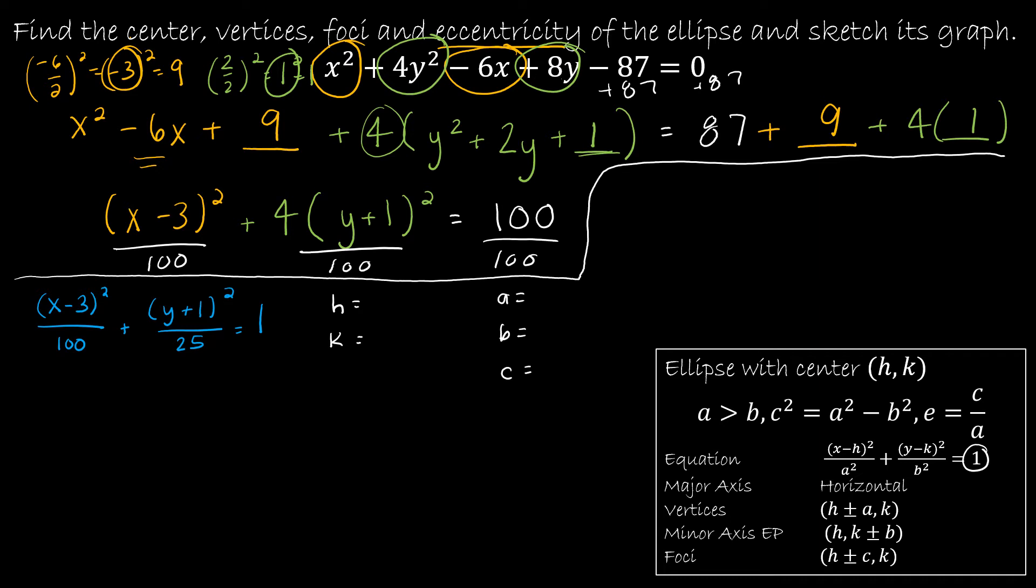From here, I'm just going to find h and k and a and b and c. Those are all of the values that I need to be able to finish this question. So because the larger value is underneath x, that's how I know that the major axis is horizontal. Which means the 100 is a squared, so a is 10. And the h value is whatever is being subtracted from x, which is 3. Now looking at y plus 1 quantity squared, the k value is whatever is being subtracted from y. So that's negative 1 because y minus negative 1 would look like y plus 1. And then b squared is 25, so the square root of 25 is 5.